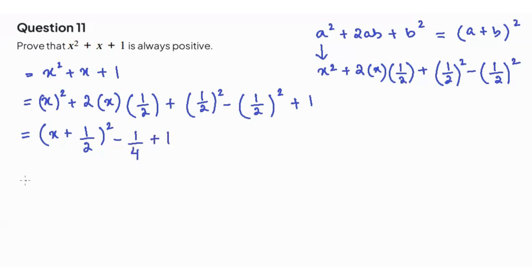Now let's combine the constants that are outside. That's going to be negative 1 plus 4 over 4, which is going to be 3 over 4.